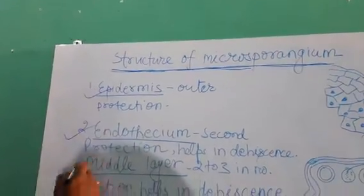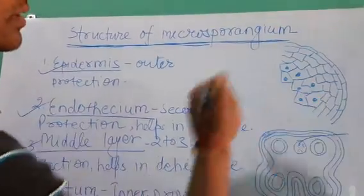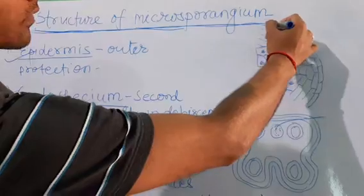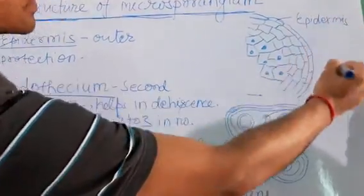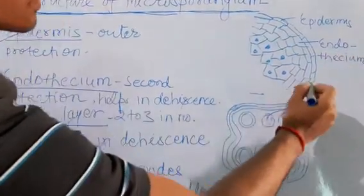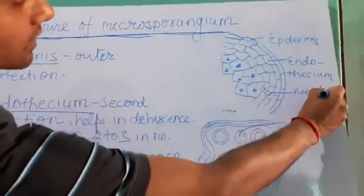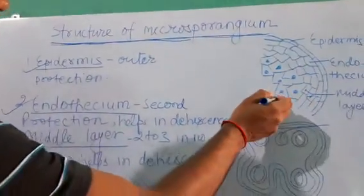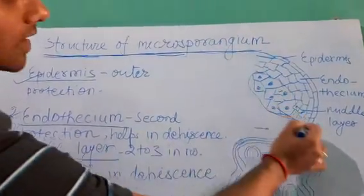Look at this diagram. The first layer of cells is the epidermis — this is the outermost layer of the microsporangium. The second layer is the endothecium. The third and fourth layers together form the middle layer, because the middle layer can be two or three layers in number.